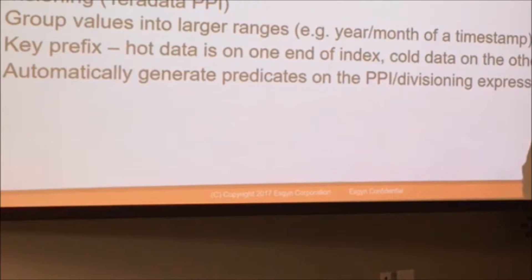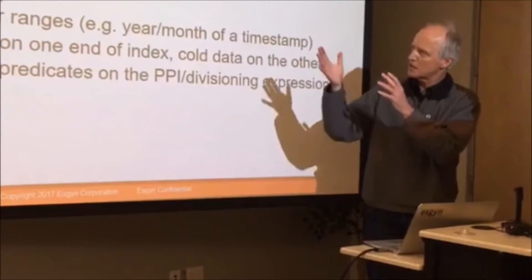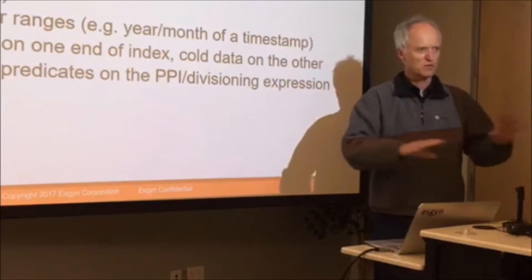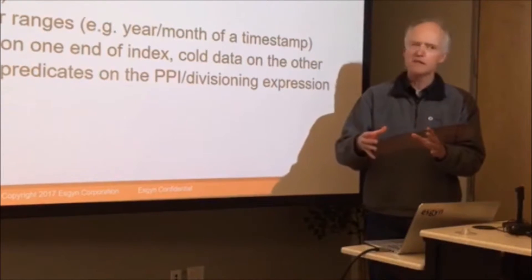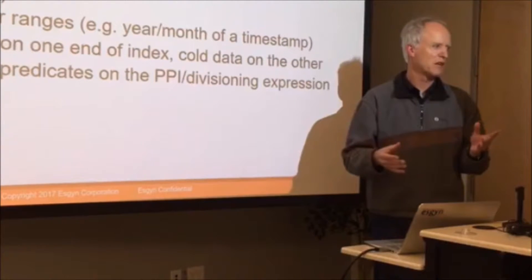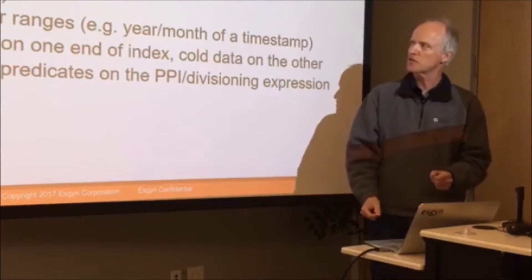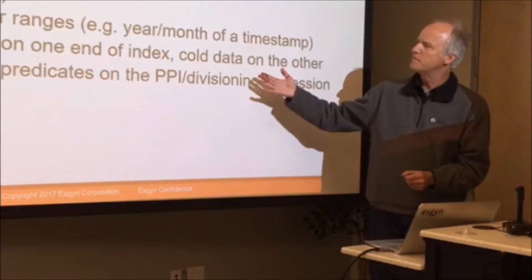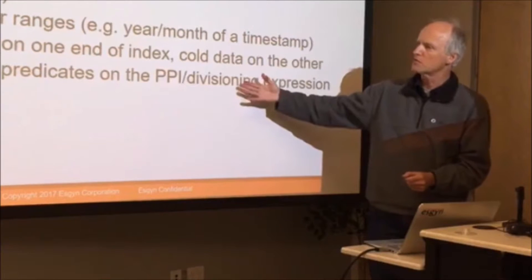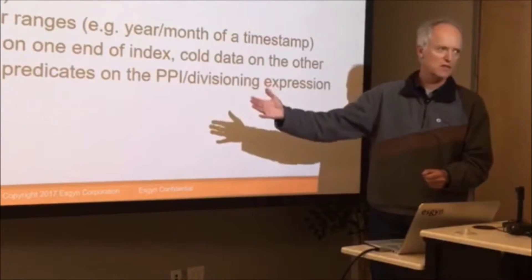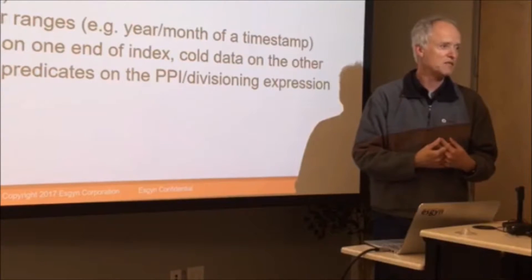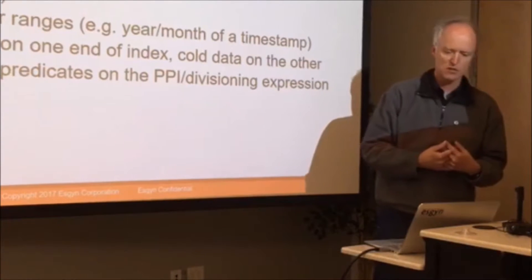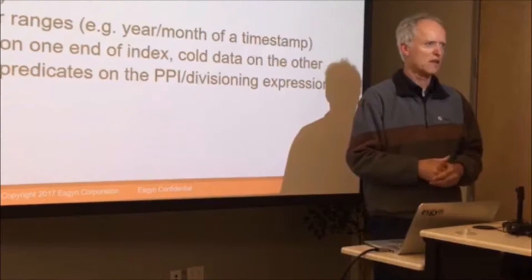In our system, we have three prefix columns in our key. The first is the salt, which spreads the data. The second is the division column — something like month or week, you can pick whatever you like. The third column is the actual column that is valuable to the user. The query engine automatically generates predicates on the salt and division columns — the SQL user does not see those columns. The system automatically updates them and adds predicates on them.